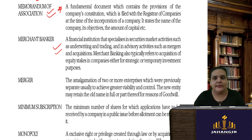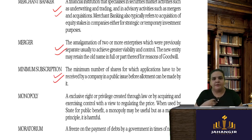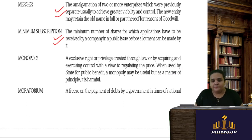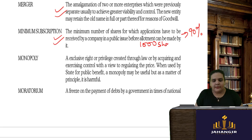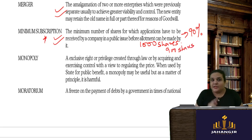A merger is when two separate enterprises come together to form a new entity. Minimum subscription is the minimum number of shares that must be applied for — as per company law, a company must receive at least 90 percent subscription. If a company issues 1,000 shares, at least 900 must be subscribed by the public; if this is not received, the entire public issue fails and money must be refunded.